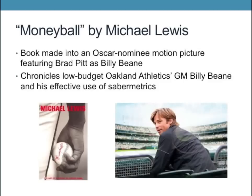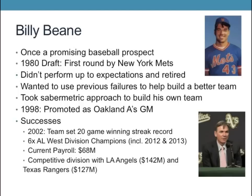One book and movie that we both read and watched is called Moneyball, written by award-winning author Michael Lewis. It received an Oscar nomination for Best Picture. This story chronicles the low-budget Oakland Athletics and the effective use of sabermetrics by their GM Billy Beane, played by Brad Pitt in the movie. To fully understand Billy Beane's success, one must understand the history and experience he had that reflects his philosophies. Before becoming a successful GM of the A's, he was once drafted out of high school as a very promising baseball prospect.